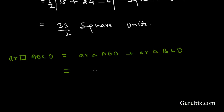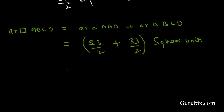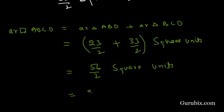Area of ABCD = 23/2 + 33/2 = 56/2 = 28 square units. So this is the solution of the question. Thank you.